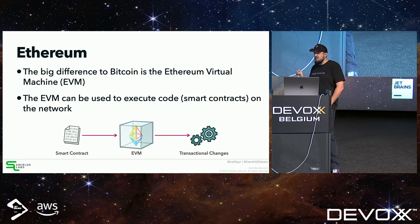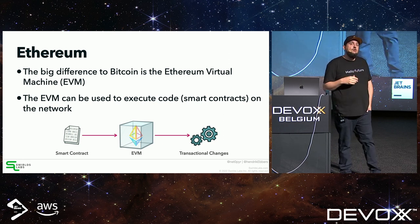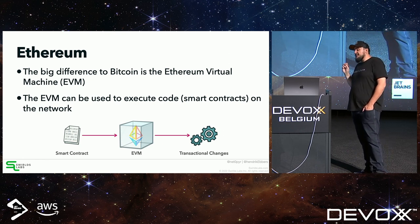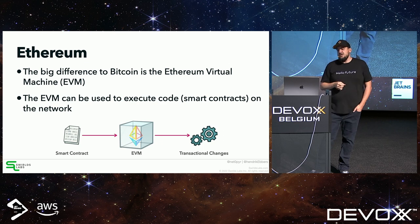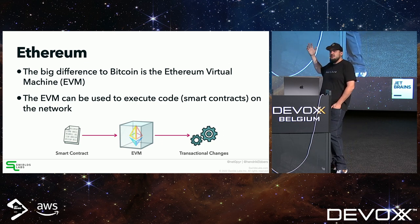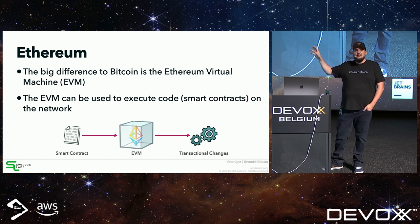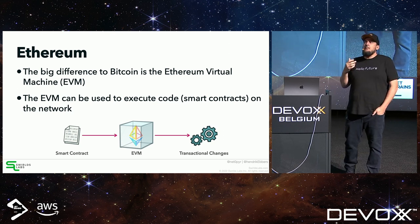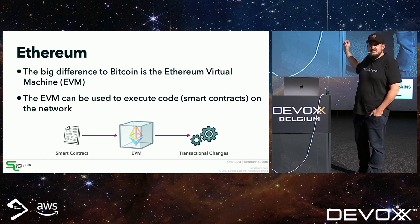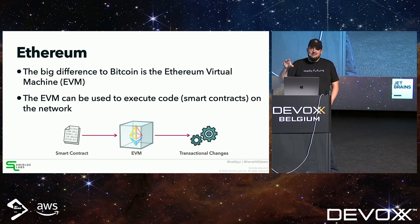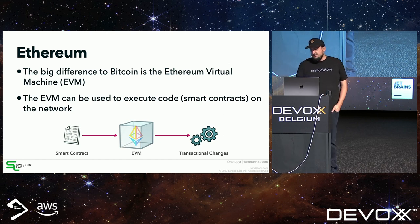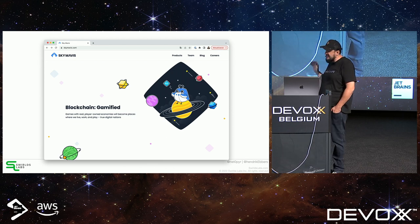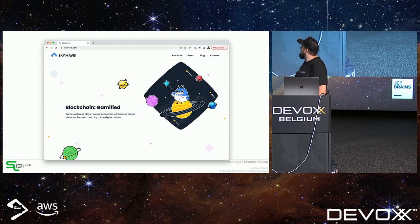For Java developers, you can think of the EVM similarly to the Java Virtual Machine. Michael will do a deep dive into the EVM later. The key feature is that you can execute code directly on the Ethereum network — on the public ledger. This code is called a smart contract, which is somewhat of a buzzword; it's really just code executed within transactions on the Ethereum network.